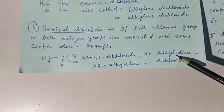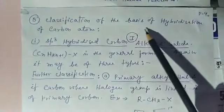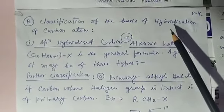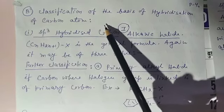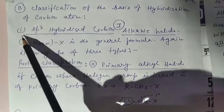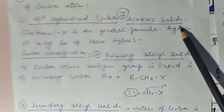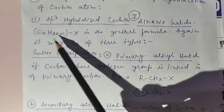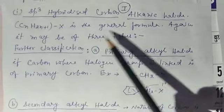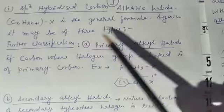The second method of classification of halocompounds is on the basis of the hybridization of the carbon atom to which the halogen is attached. The first type involves sp3-hybridized carbon with the halogen attached. This is again divided into several types. The first type of sp3-hybridized halocompound is alkanic halide with the general formula CₙH₂ₙ₊₁X, which may be of three types.